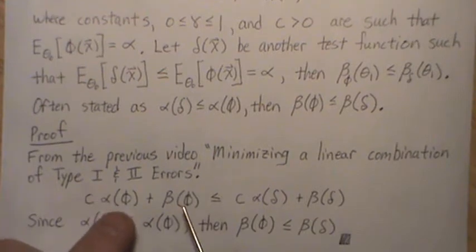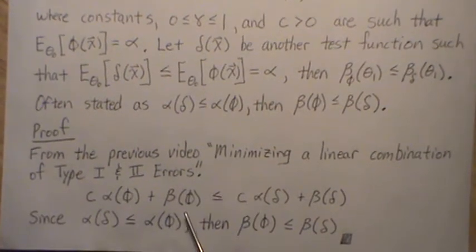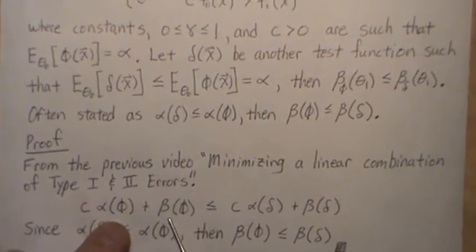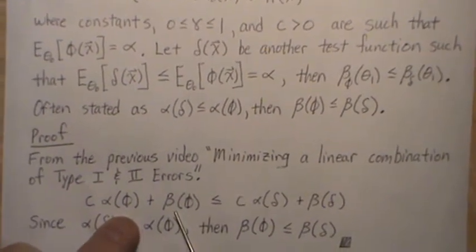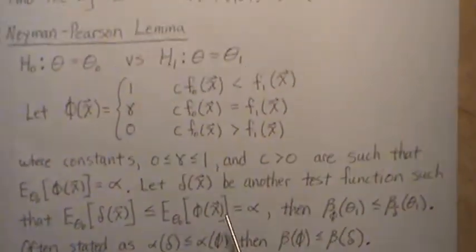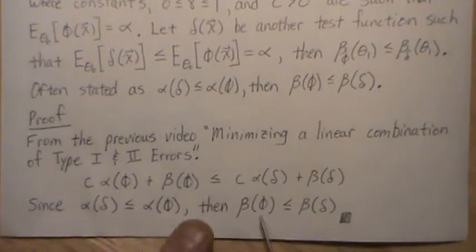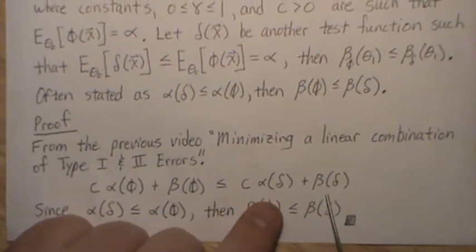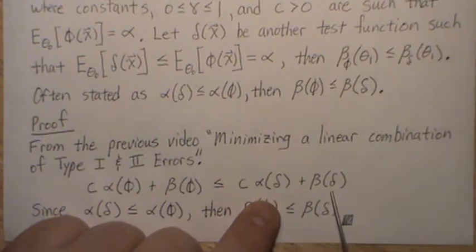we proved that a linear combination of the type 1 and type 2 errors, when the test function is defined like this, is always less than or equal to that same linear combination of the type 1 and type 2 errors for any other test function.